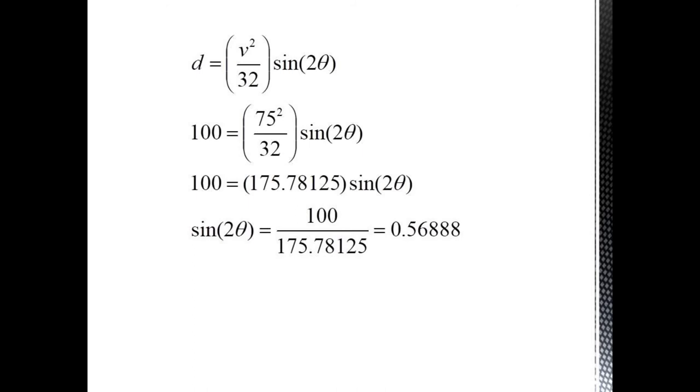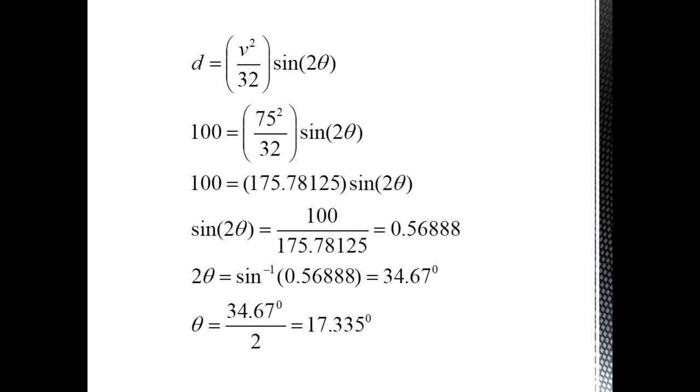In this equation, v is our initial velocity, which is 75, and d is 100 meters. So we only need to solve this for theta. We get that 100 equals 75 squared over 32 sine 2 theta, which equals 175.781 sine 2 theta. Hence the sine of 2 theta equals 0.5688. 2 theta is then equal to the sine inverse of 0.56888, which is 34.87 degrees. So theta is equal to 34.67 over 2, which equals 17.335 degrees.